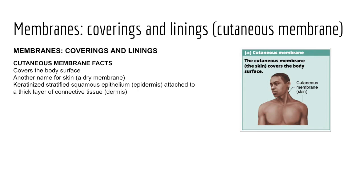Cutaneous membranes cover the body's surface and are sometimes called a dry membrane. They are composed of keratinized stratified squamous epithelial tissue attached to a thicker dermal layer — the skin. We'll learn more about this when we study the integumentary system in chapter five at the end of this term. Next week, we move to chapter six and the skeletal system, spending three weeks on chapters six through eight. Please reach out during office hours if you have any questions.